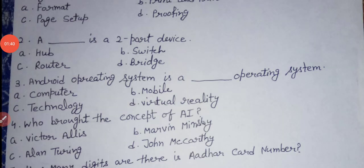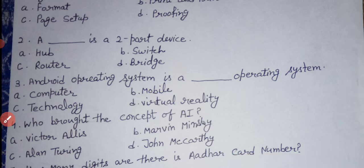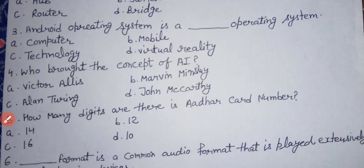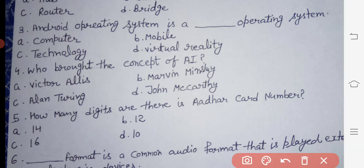Next question: Android operating system is a dash operating system. The answer is option B — mobile. Android operating system is a mobile operating system. Next question: who brought the concept of AI? The answer is option D — John McCarthy.